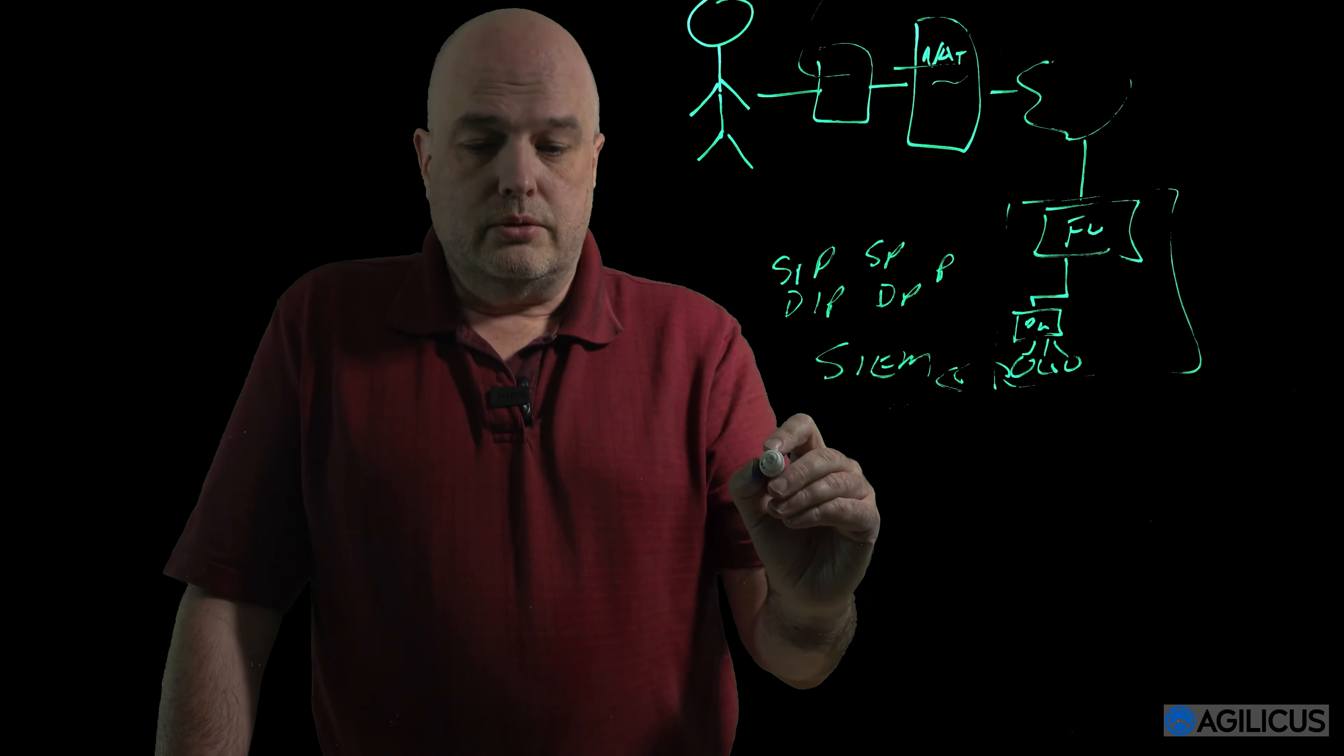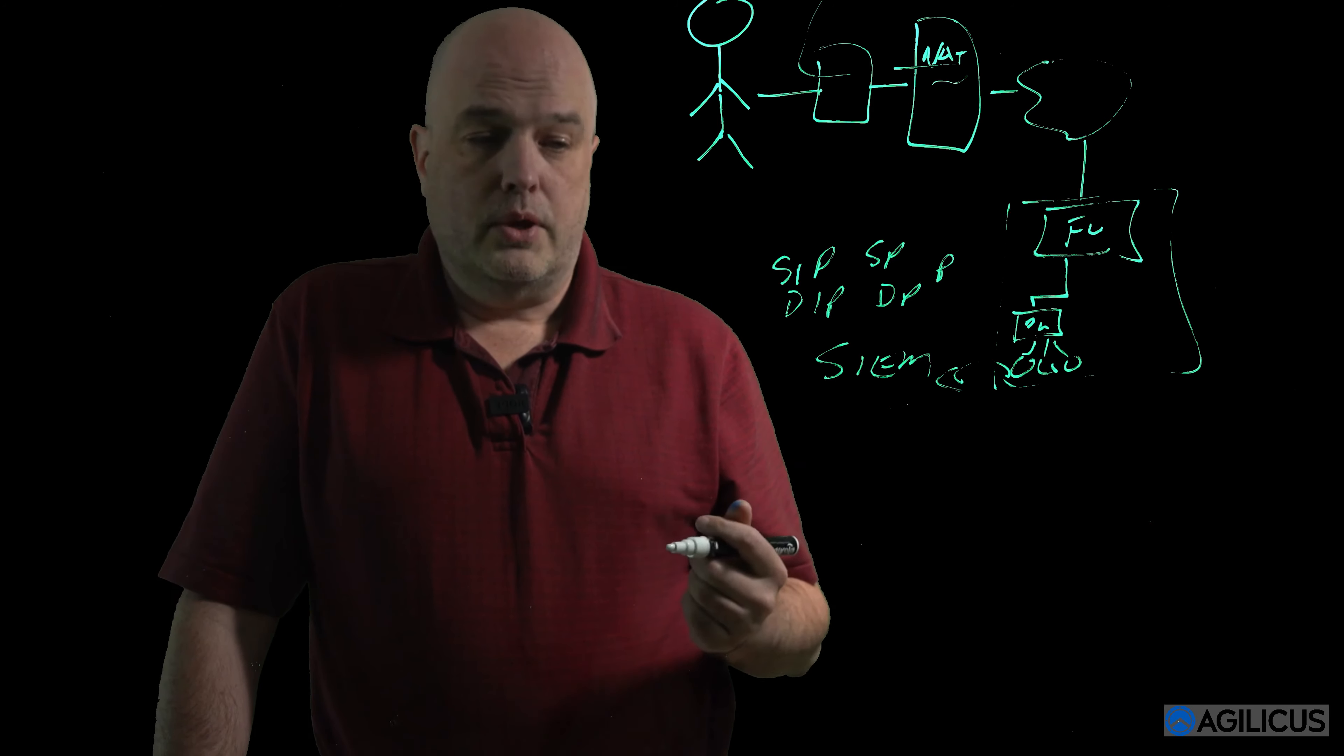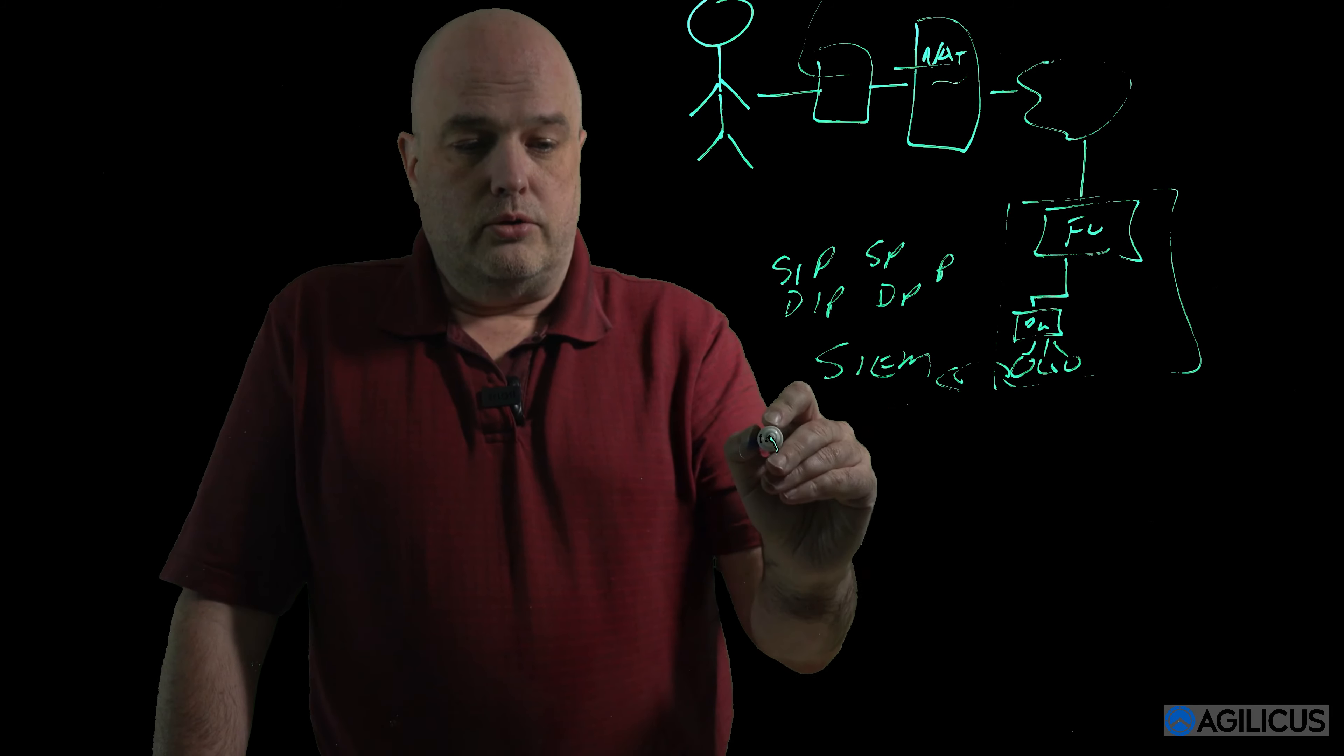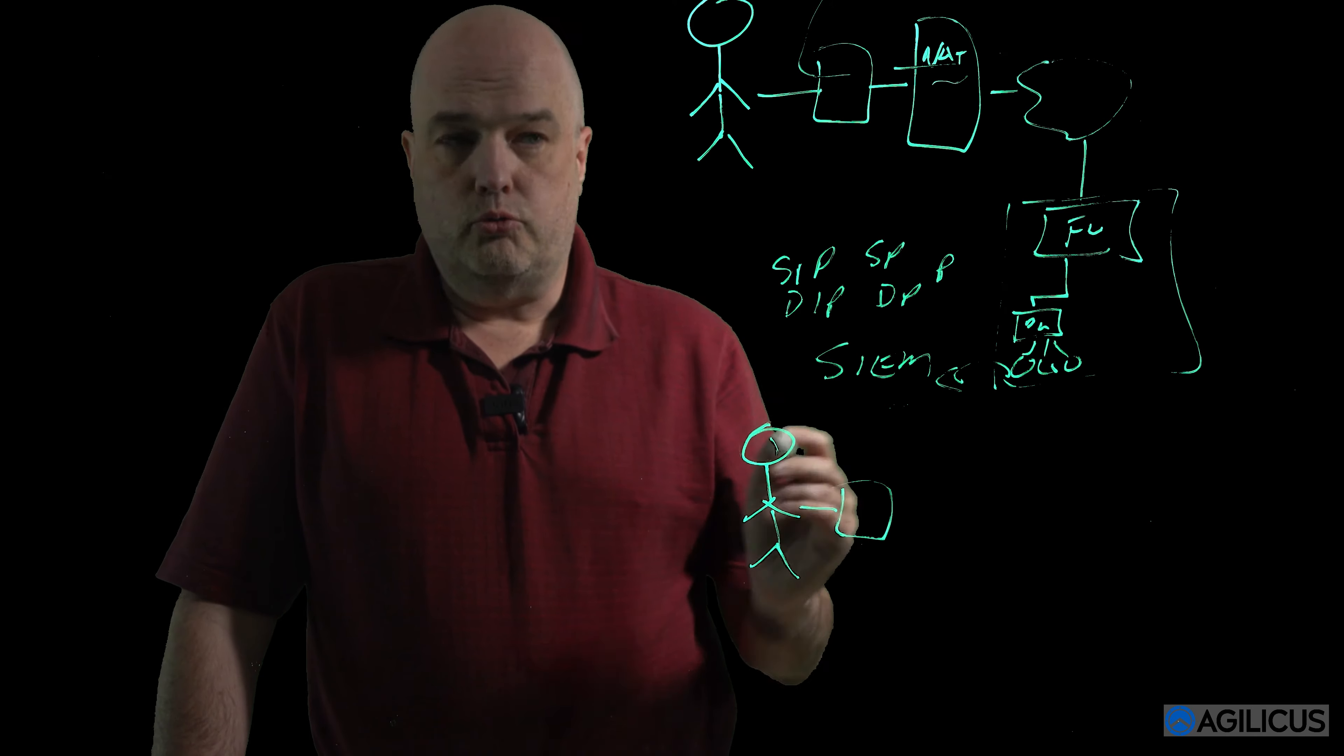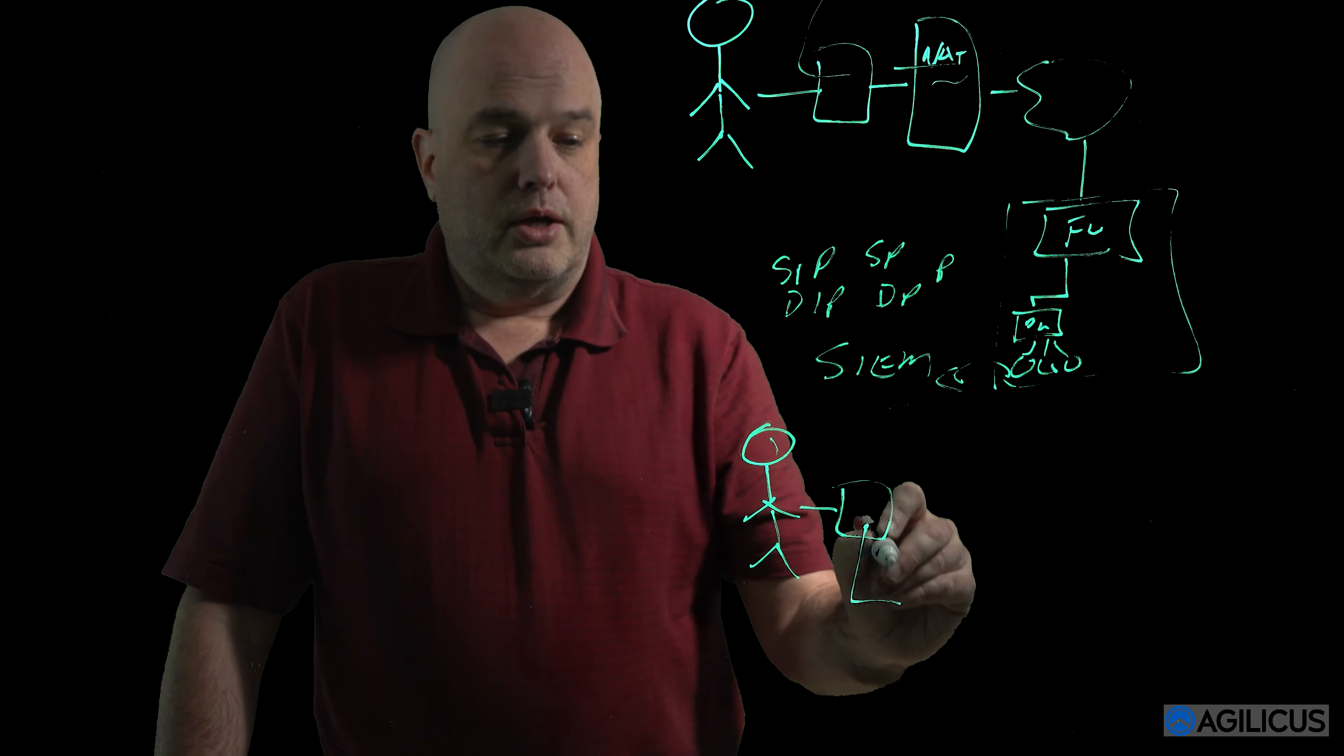So the way that we recommend achieving it is with zero trust networking, with cryptography, with a header called a JWT. And in that model, we have a user using the device of their choice, no special client, just the regular old browser.